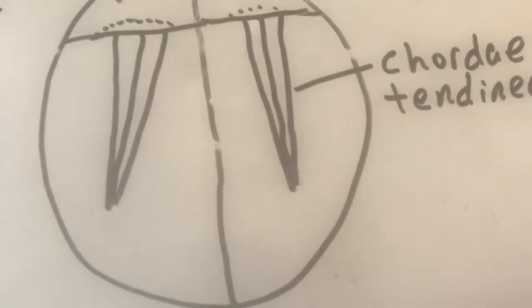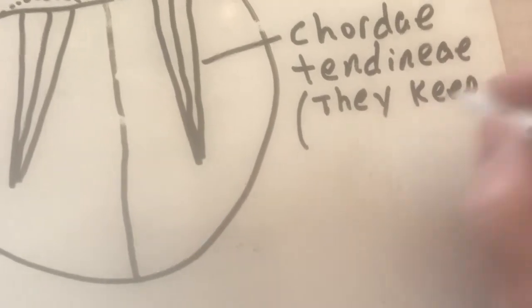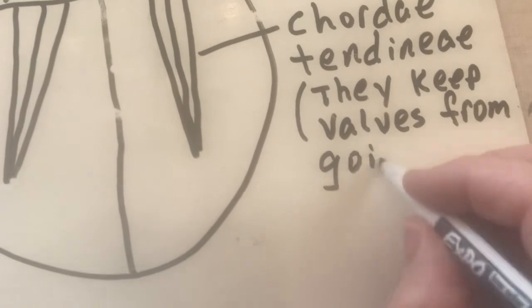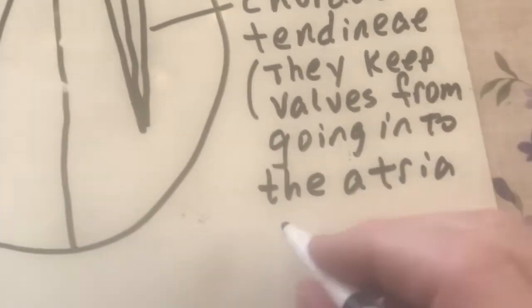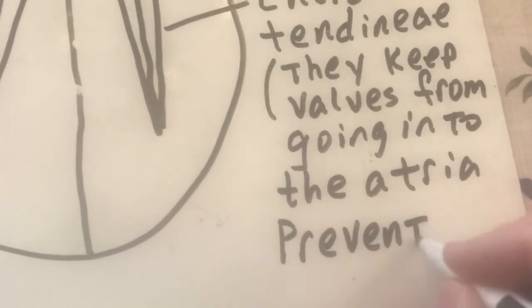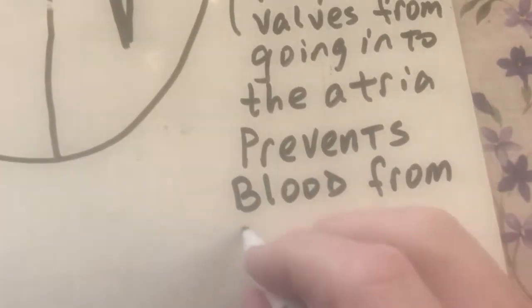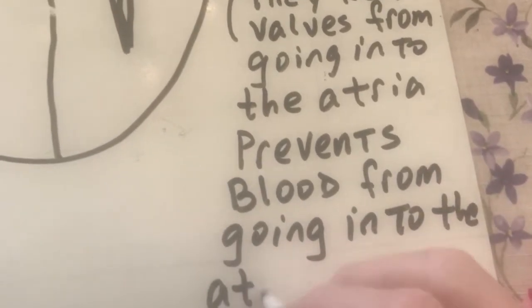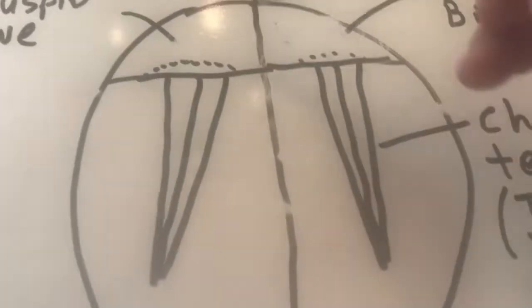And so what these do is they keep valves from going into the atria. Okay, and what this will do is it will prevent blood from going into the atria. Okay, so that way the blood's going to go out either to the body. Remember, because from the left side, we want to go out to the body. From the right side, we want to go to the lungs. So these are going to keep the valves from going backwards.